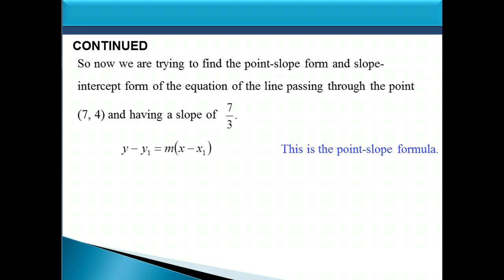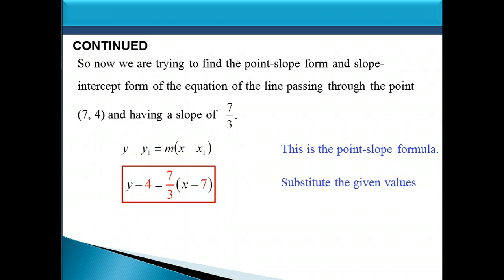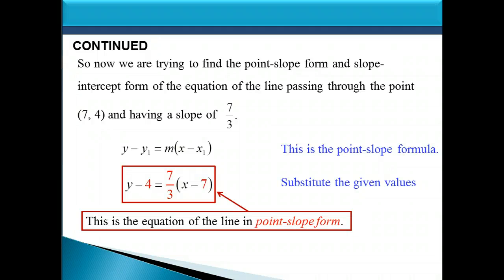Here's the point-slope formula again. We substitute the given values: y1 is 4, the slope is 7 thirds, and x1 is 7. There's no minus-and-negative simplification needed here, so this is the equation of the line in point-slope form: y minus 4 equals 7 thirds times x minus 7.